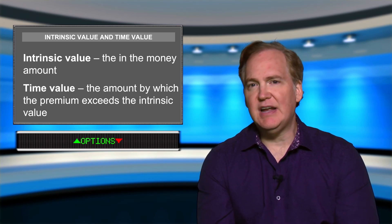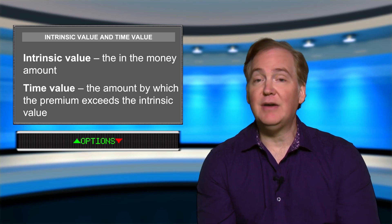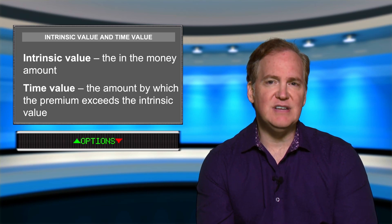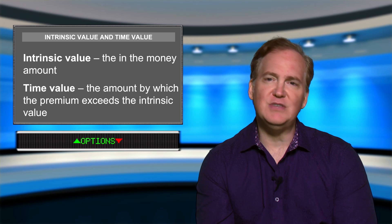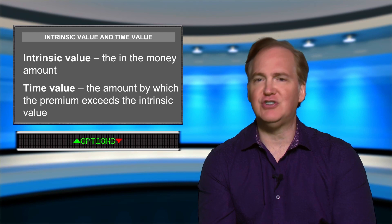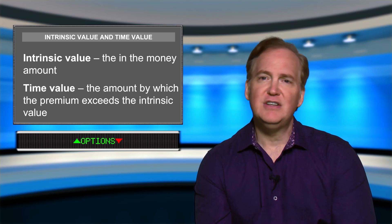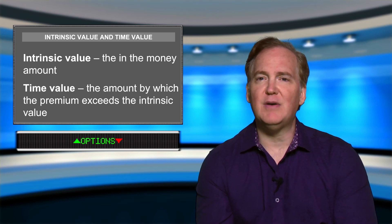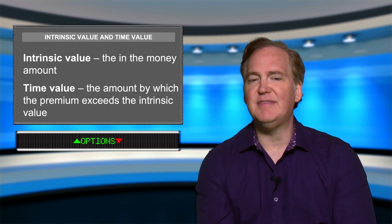An option that is in the money is said to have intrinsic value. An option's intrinsic value is the amount the option is in the money. An option's total premium is determined by adding the intrinsic value to the time value of the option. Time value is what someone would pay for the opportunity to exercise that option down the road. The more time to expiration, the greater the time value. An option expiring in two weeks has much less time value than one expiring six months from now.